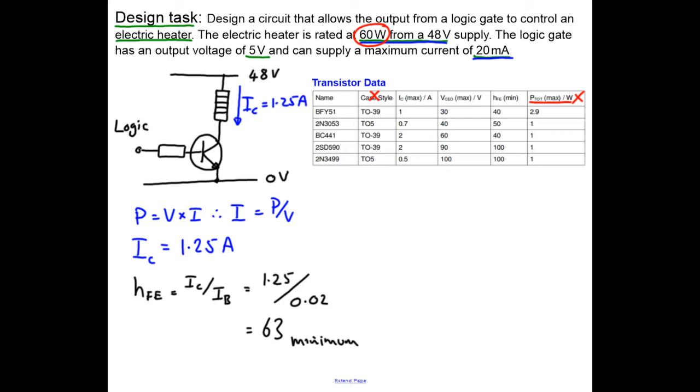So we can look at each of the transistors in turn and decide whether or not they're going to be useful. So the first thing is the collector current, this one here, has got to be at least 1.25 amps. So this one's no good, this one's no good, and this one's no good because they can't handle the current. This one also, and this one also, don't have a high enough collector emitter voltage because we're using a 48 volt supply. Now the next thing is we need a gain of 63, so this one's no good, this one's no good, this one's no good. So is there anything that's left? Well yes, this one can take 2 amps of collector current, 90 volts supply, a minimum gain of 100. So this is the transistor we're going to use, the 2SD590.